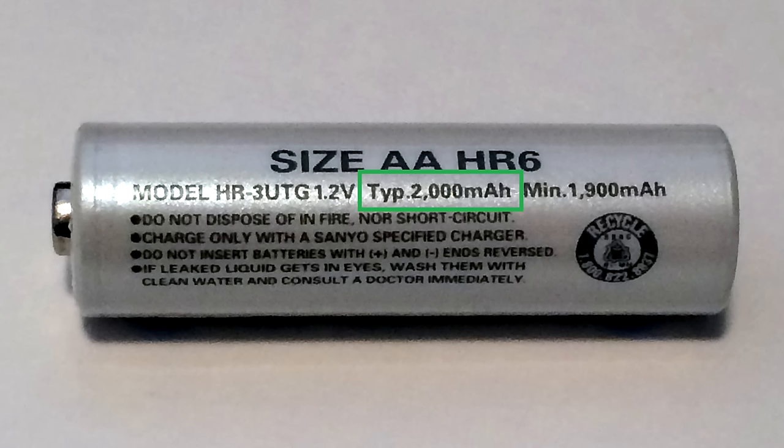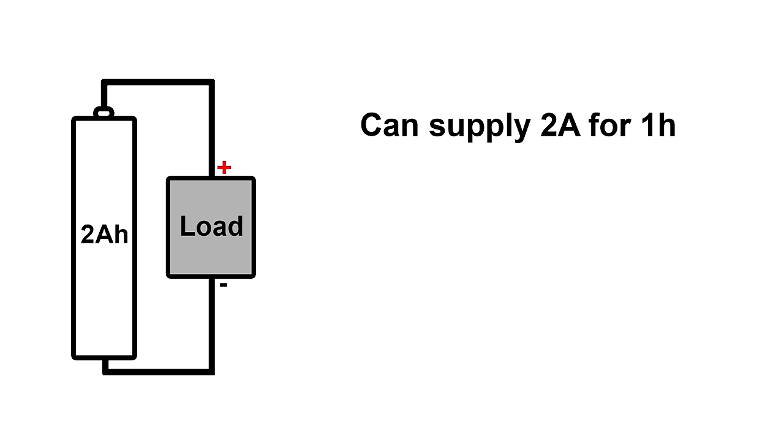For example, here we have a rechargeable AA battery. The capacity is 2000 milliamp hours, or 2 amp hours. The simple explanation of what this means is that it can supply 2 amps for 1 hour until the battery runs out of energy. 2 amps multiplied by 1 hour is 2 amp hours.